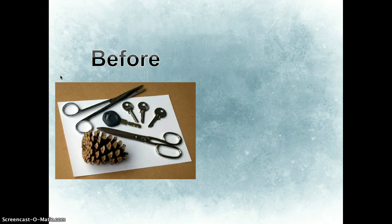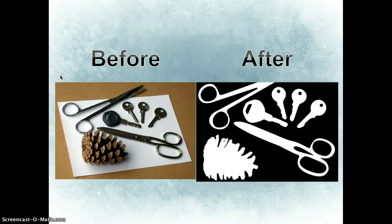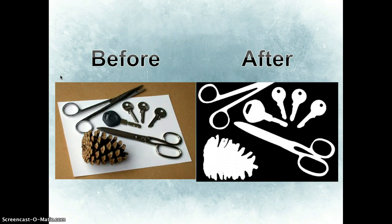We start with this — the end result is flatter. The three-dimensionality of the pinecone is lost. That's something I want you to consider when you're making your photograms: three-dimensional objects may not look the way you imagine. It's going to look like a shadow or a reflection of that object, rather than having the height of the object.